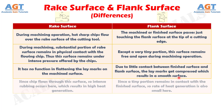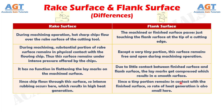Number four: since chip flows through the rake surface, intense rubbing occurs here, which results in high heat generation, whereas since only a tiny portion of the flank surface remains in contact with the finished surface, the rate of heat generation is also small in the flank surface.